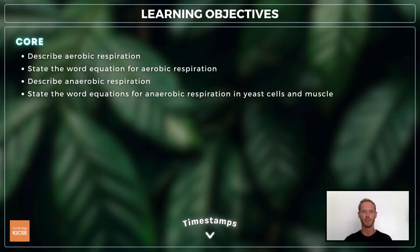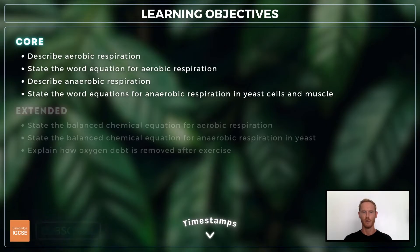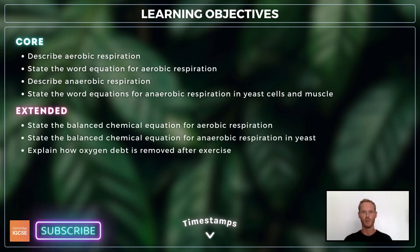For topic 12.2, you need to describe and state the word equation for aerobic respiration, and describe and state the word equation for anaerobic respiration in yeast and muscle cells. For extended, you also need to state the balanced chemical equations and explain how oxygen debt is removed after exercise.